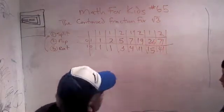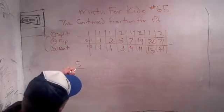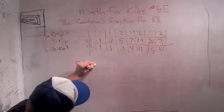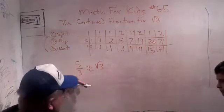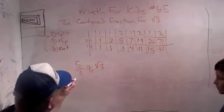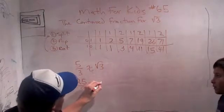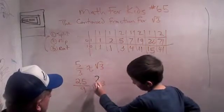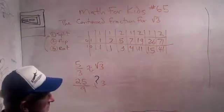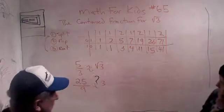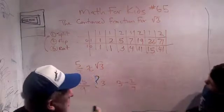These are going to be interesting approximations to the square root of 3. Let's see if they're any good. Let's look at 5 thirds. So 5 thirds approximately equals the square root of 3. Let's square both sides: 5 squared is 25, divided by 9. Well, 27 ninths would be exactly 3, so this is 3 minus 2 ninths. Very close to 3.